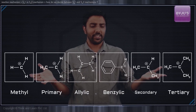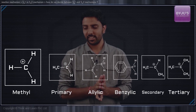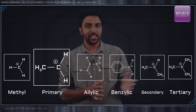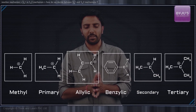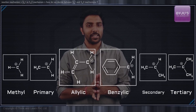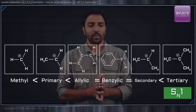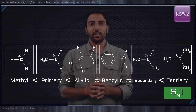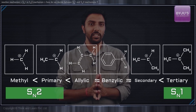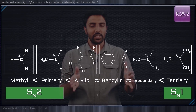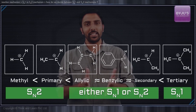Let us tabulate the entire species. We have the methyl substrate, followed by the primary substrate, and on the other extreme we have the tertiary substrates. Between these two extremes, we have the allylic, benzylic, and secondary substrates. Tertiary substrates readily undergo the SN1 mechanism, whereas methyl and primary substrates undergo the SN2 mechanism much more readily. These three in the middle — allylic, benzylic, and secondary — can either choose the SN1 pathway or the SN2 pathway.